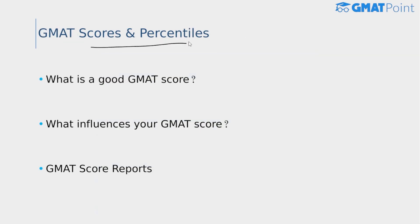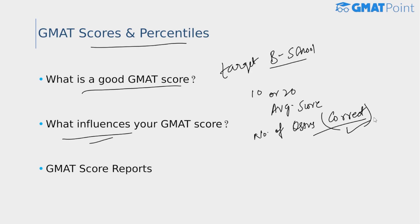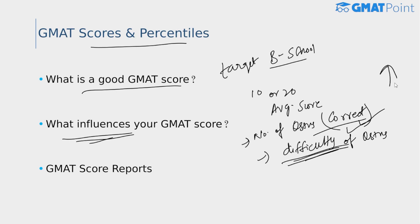Now, what is a good score on the GMAT? A good score depends on your target B-school and varies from person to person. A good GMAT score is usually 10 to 20 points above the average score of the incoming batch for that particular B-school. Key factors that influence your GMAT score include the number of questions you answered correctly and the average difficulty level of those questions. Answering more questions correctly at higher difficulty levels leads to an overall higher GMAT score.